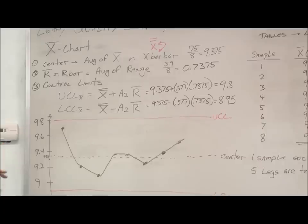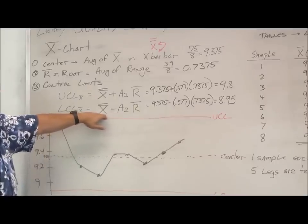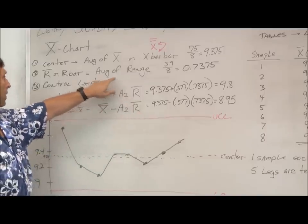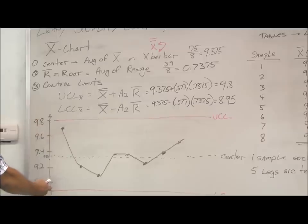We do the same thing for the lower control limit. We know that the average of the average of our means is 9.375. We got the A2 from the chart. And we calculated the average of our ranges here. So that gives me my lower control limit.